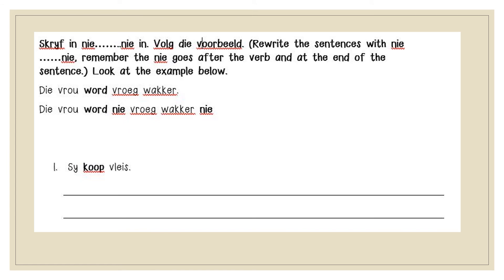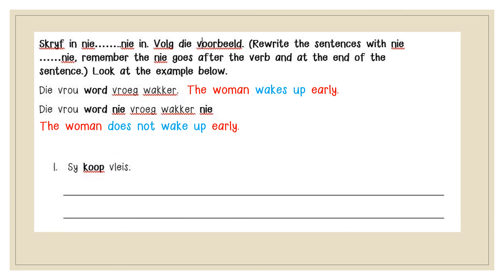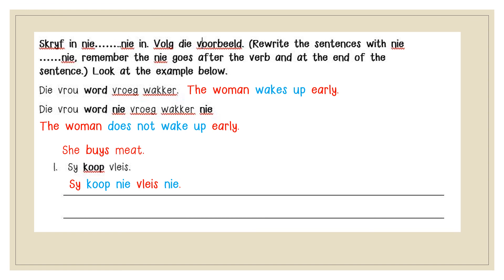Remember that 'nie' goes after the verb and at the end of the sentence. Let's look at our example: 'Die vrou word vroeg wakker' — The woman wakes up early. The verb is 'word'. In the negative form: 'Die vrou word nie vroeg wakker nie' — The woman does not wake up early. Now number one: 'Sy koop vleis' — She buys meat. The verb is 'koop', so the negative is: 'Sy koop nie vleis nie' — She does not buy meat.